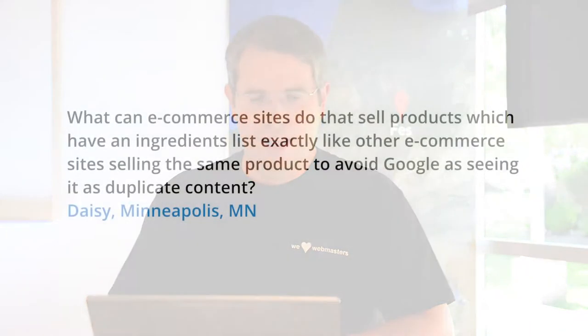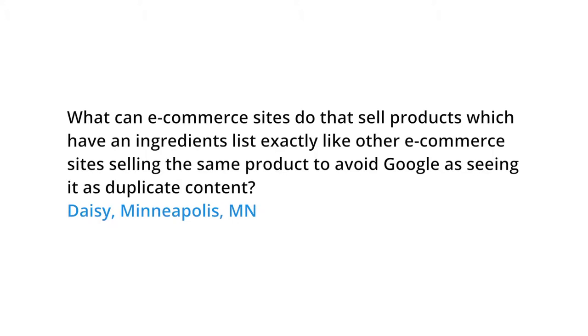Today's question comes from Minneapolis. Daisy wants to know: what can e-commerce sites do that sell products which have an ingredients list exactly like other e-commerce sites selling the same product, to avoid Google seeing it as duplicate content? This is a really interesting question. Let's consider an ingredients list, like food, where you're listing the ingredients in that food.